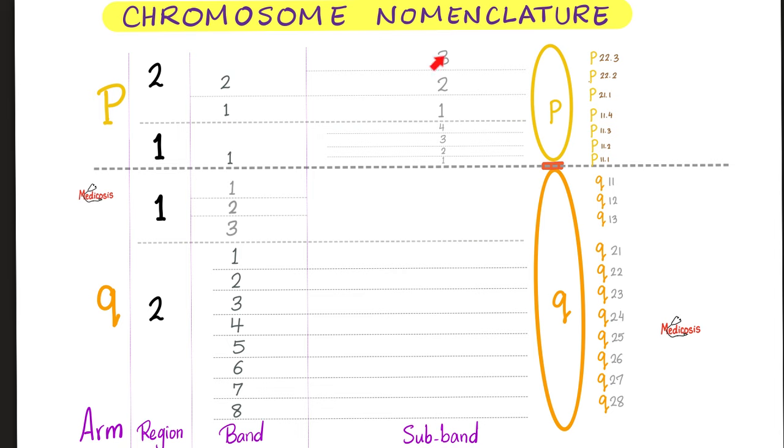Let's go. Can you name this doofus right here? Sure. Let's start at the beginning. It's P. Two. Two. Point three. Oh, so short arm, region number two, band number two, subband three. Got it.